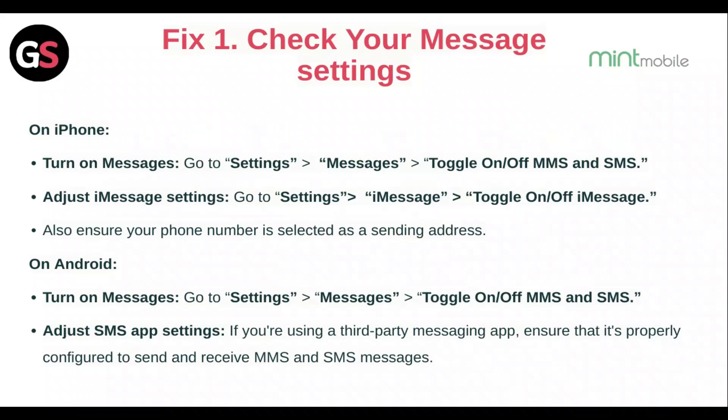On Android, turn on Messages. Go to Settings, then Messages, then toggle on and off the MMS and SMS. Adjust the SMS app settings. If you are using a third-party messaging app, ensure that it is properly configured to send and receive MMS and SMS messages.